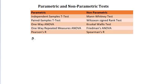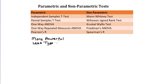Parametric tests are preferable because they're more powerful — that is, they are more likely to detect true differences between samples. They also have a lower probability of type 2 error, which is where you fail to reject a false null hypothesis.